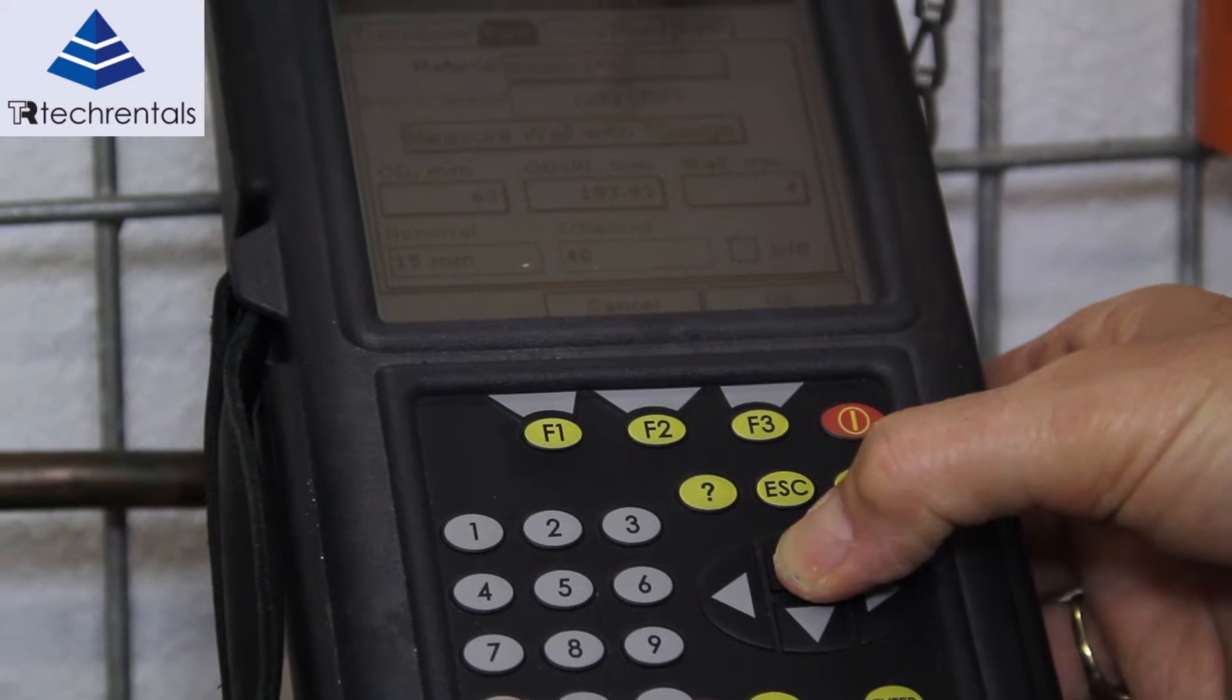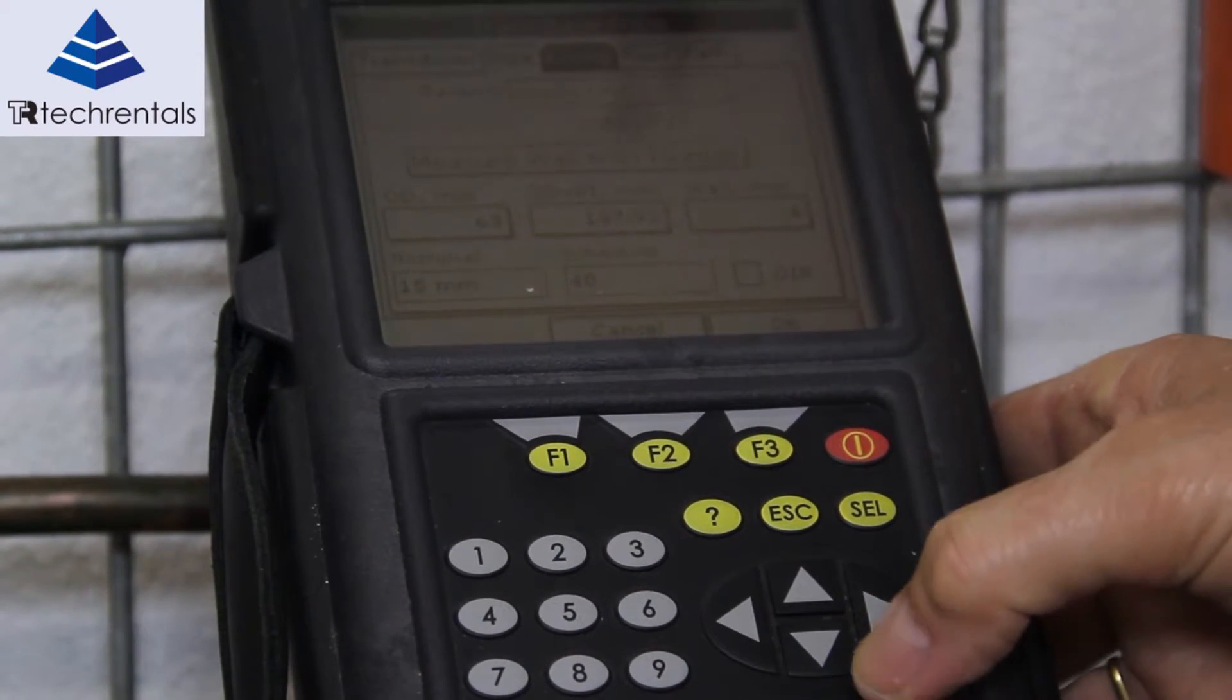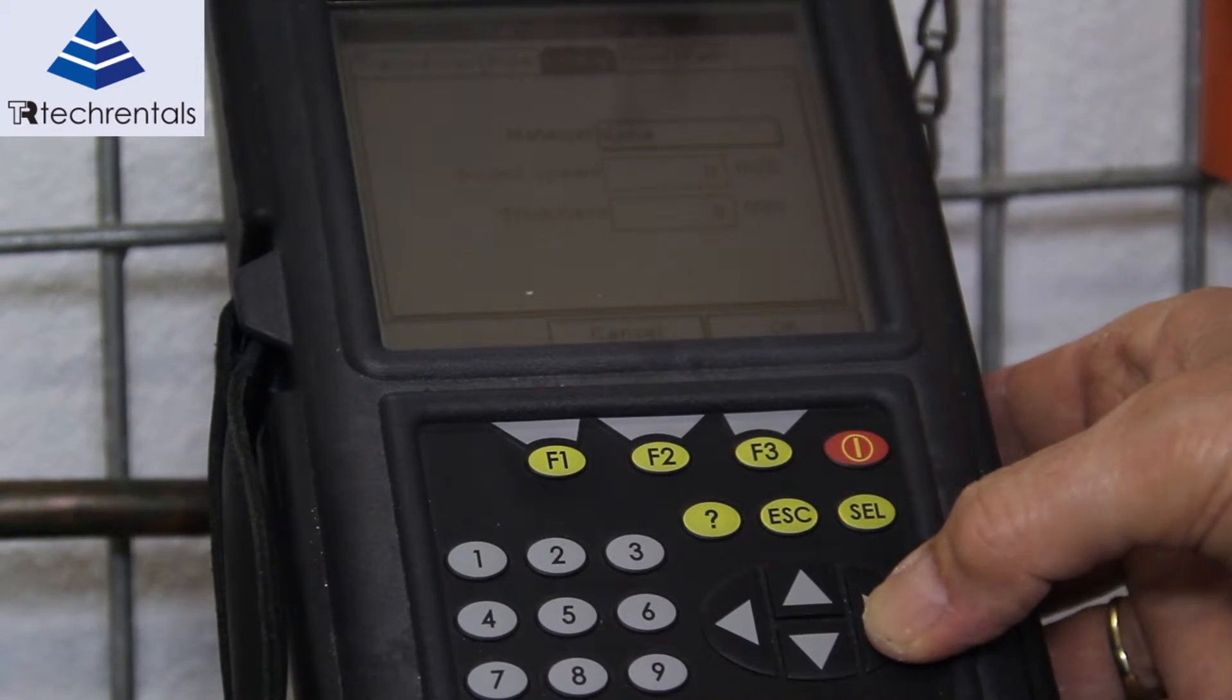Come up here, now next option we've got here is lining. In this case this pipe isn't lined.